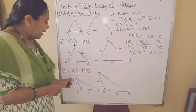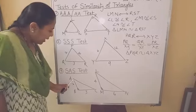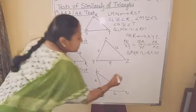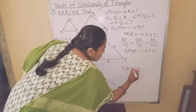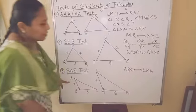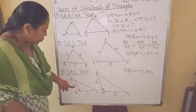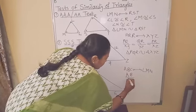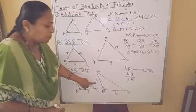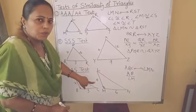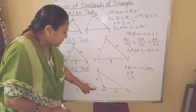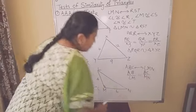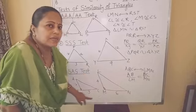Now, the third test is the SAS test. Here we have triangle ABC and triangle LMN, with the correspondence A, B, C corresponds to L, M, N. The ratio of corresponding sides: AB upon LM is 2 upon 4, which simplifies to 1 upon 2. The second pair of corresponding sides, BC upon MN, is 3 upon 6 — simplifying, you again get 1 upon 2. So these pairs of corresponding sides are in proportion.